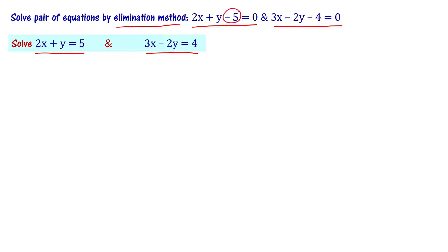We transpose minus 5 and minus 4 to the right-hand side. Now we have to solve these two equations using the elimination method. There are two variables: x and y.